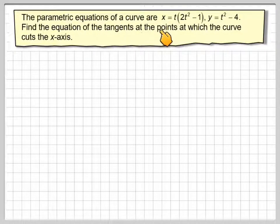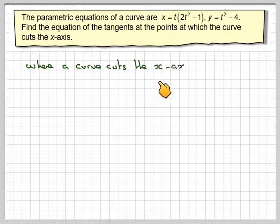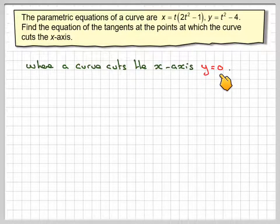The parametric equations of the curve are x equals t times (2t squared minus 1), y equals t squared minus 4. Find the equation of the tangent at the point at which the curve cuts the x-axis. So where the curve cuts the x-axis, y is equal to 0.